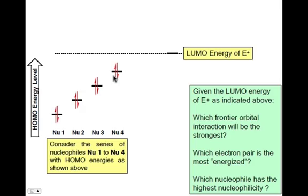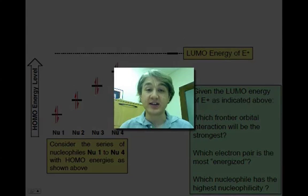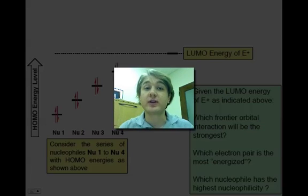So therefore, nucleophile 4 has the highest nucleophilicity. And this is how HOMO energy is related to our nucleophilicity. And you'll be able to use this many times to figure out which nucleophiles are going to be more reactive than others.